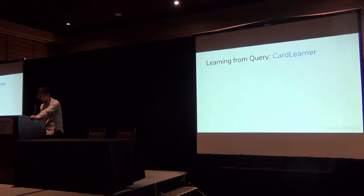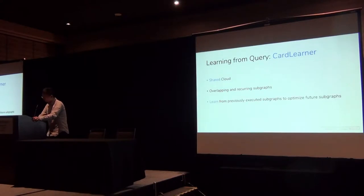Let's look at the first piece of work. The work happened two years ago when I interned at Microsoft. It's called Card Learner, towards a learning optimizer for shared cloud. The key here is the word shared cloud, which refers to a setting where thousands of users are sharing the cloud computing resource to execute queries. Because of the sharing, we noticed that the same type of query subgraphs will appear over and over again. So the idea here is, can we learn from previously executed query subgraphs to optimize for future subgraphs?